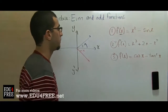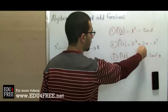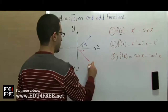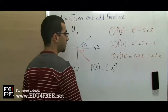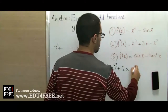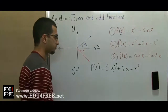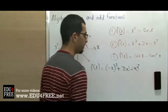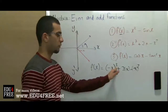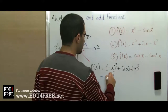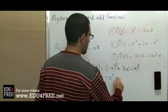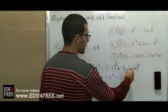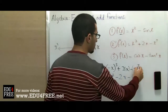The second example is f(x) = x - x³ + 2x - x⁷. We plug in negative x and we get -x - (-x)³ + 2(-x) - (-x)⁷. Since the exponents 3 and 7 are odd numbers, we get -x³ for the cube term and -x⁷ for the seventh-power term.